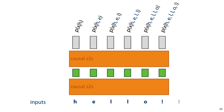At point one, we get a probability distribution on the next character, given that the preceding character is 'h'. At point two, we get a probability distribution on the next character, given that the preceding characters are 'h' and 'e', and so on for all points in the sequence.